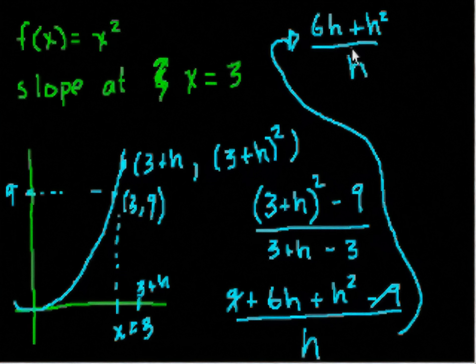And now we can simplify this, right? Because we can divide the top and the bottom, the numerator and the denominator by h, and you get 6 plus h squared. So that's the slope between these two points. It's 6 plus h squared.